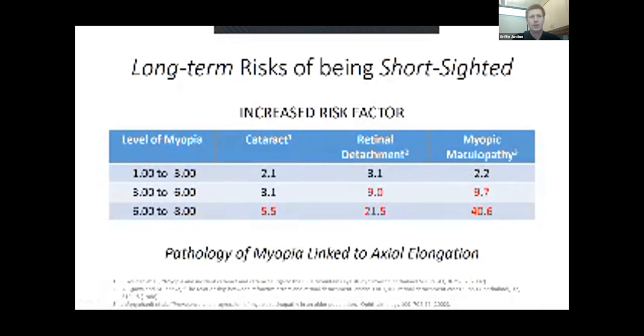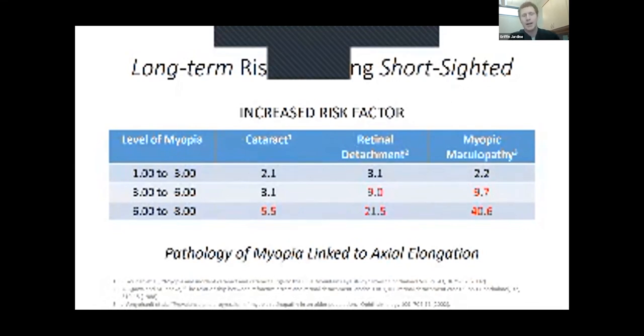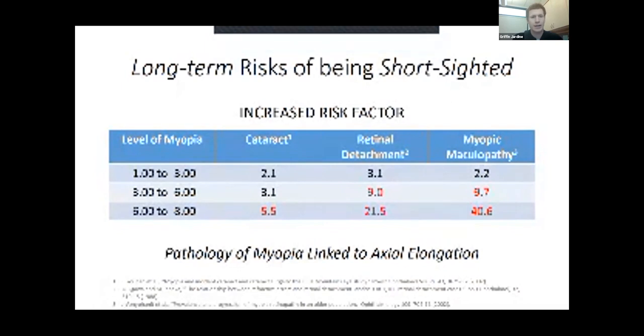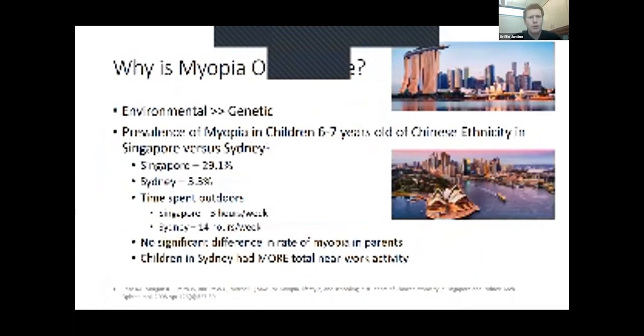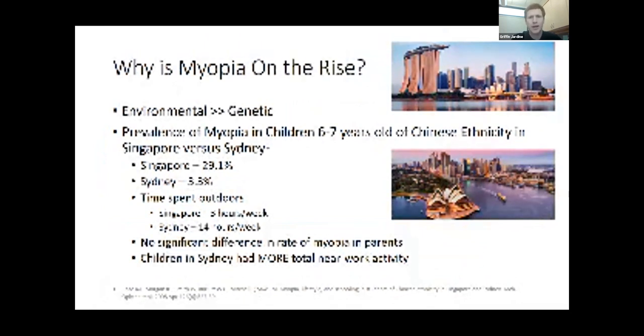I know this is a pretty common topic. This has really caught fire in parts of the world where this is already causing a lot of problems. One question is, why is myopia on the rise? I think it's certainly multifactorial, but most studies are showing it's predominantly environmentally driven. One study that was really interesting took families, children of Chinese ethnicity living in Singapore versus Sydney.